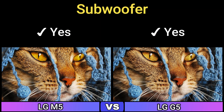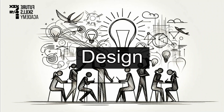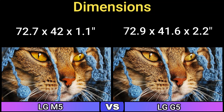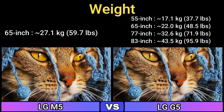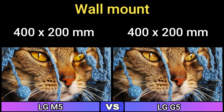Next: design. Dimensions: 72.7 x 42 x 1.1 inches and 72.9 x 40 x 1.6 x 2.2 inches. Weight: 27.1 kg. Wall mount: 400 x 200 mm.